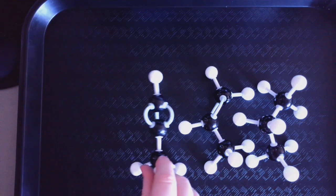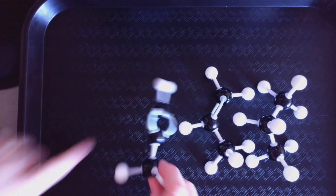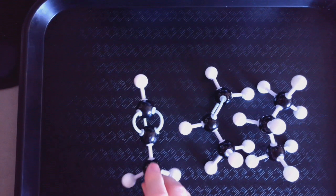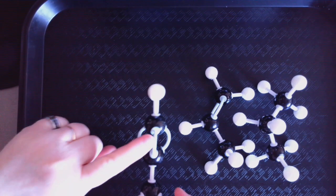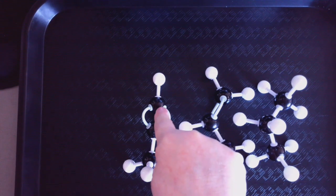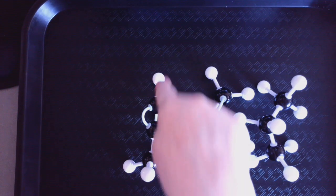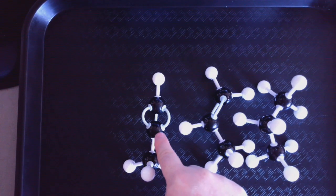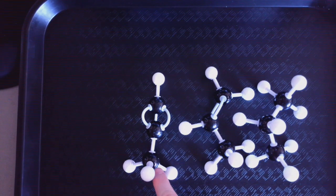And then this final one is propyne. See that triple bond? Okay, and again, this is unsaturated because it is not full of hydrogens. So the condensed structural formula would be CHC, CH3.